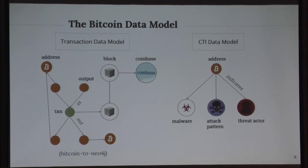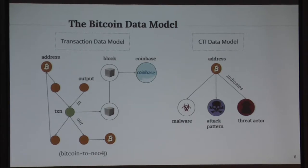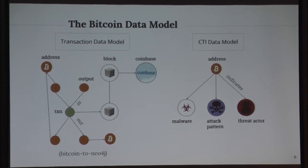Before explaining the workflow and tool we developed, I want to go over the Bitcoin data model as well as the cyber threat intelligence data model, and how Bitcoin addresses can be helpful in a CTI context. There are two main abstractions within the Bitcoin data model: blocks and transactions. Blocks are mined by miners and have properties such as block height, which maps directly to a specific time. Every 10 minutes a block is mined, and a coinbase reward is generated for the miner. Each block contains transactions.